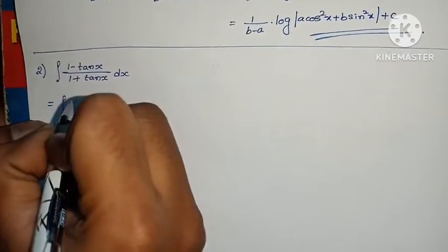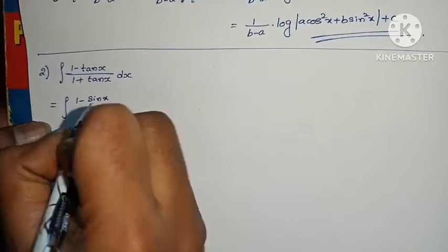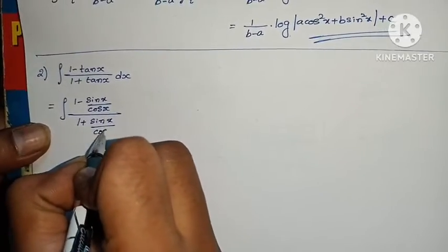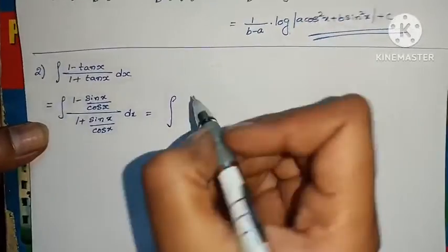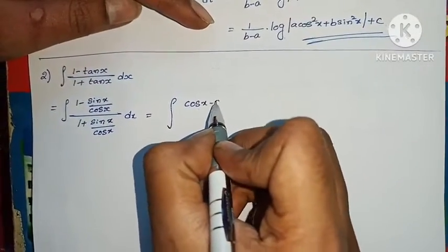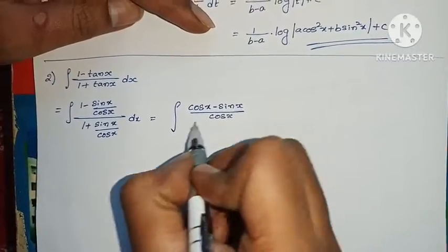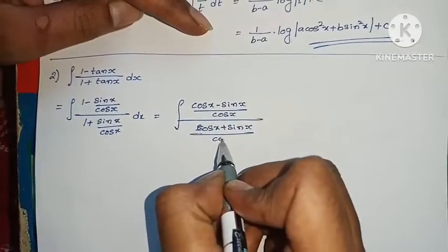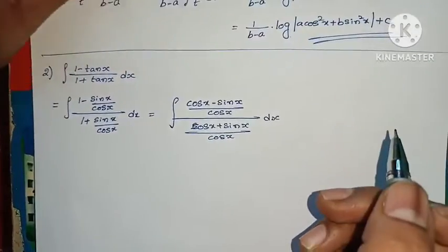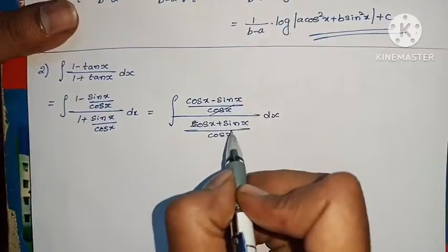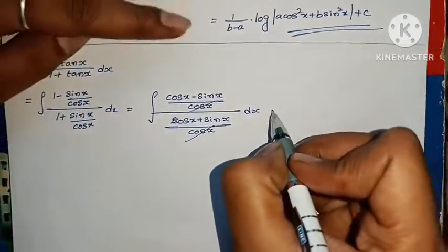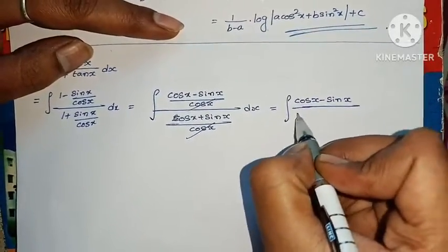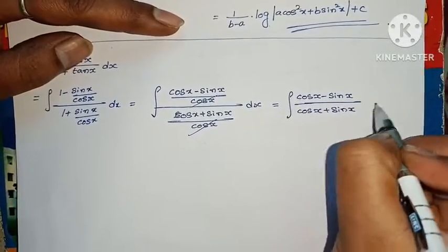Second problem: integral of (1−sinx)/(1+sinx) · (1/cosx) dx, which simplifies using tan = sin/cosx. Taking LCM, we rewrite as (cosx − sinx)/cosx divided by (cosx + sinx)/cosx, giving integral of (cosx − sinx)/(cosx + sinx) dx. Let sin x + cos x = t.